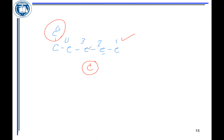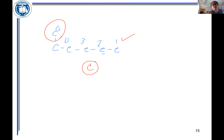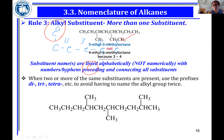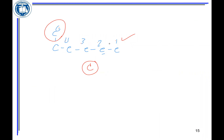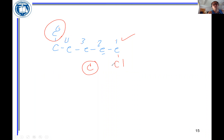A carbon branch cannot be on the first carbon because that would extend the main chain. However, if you have a non-carbon substituent — like Cl or a bromide — then it can be on the first carbon. For example, if you have a Cl on carbon one of a six-carbon chain, that gives you 1-chlorohexane.